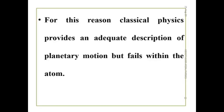Therefore, we can say that classical physics adequately describes macroscopic systems like planetary systems. But it fails for atoms, because in macroscopic bodies the statistical average of quantum results matches the classical results — so classical mechanics works fine there. However, if we apply classical mechanics to microscopic systems, we cannot obtain the proper results.